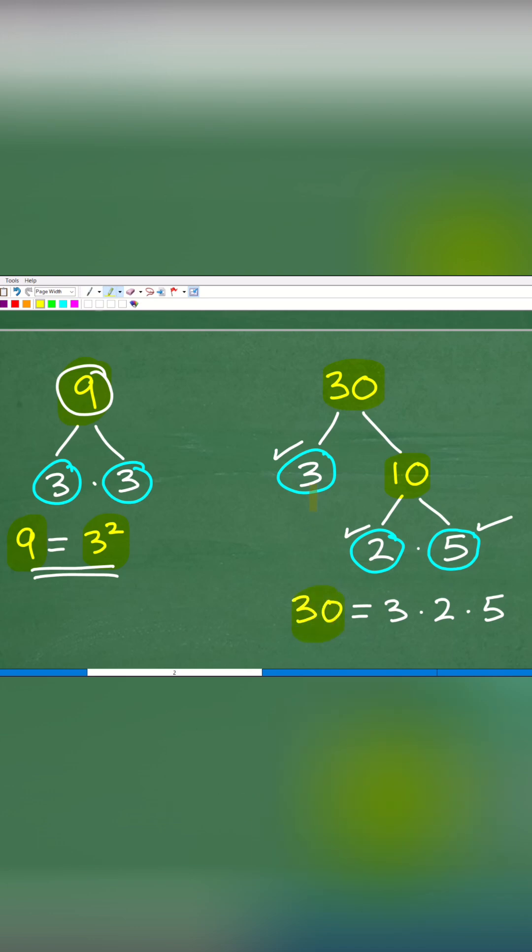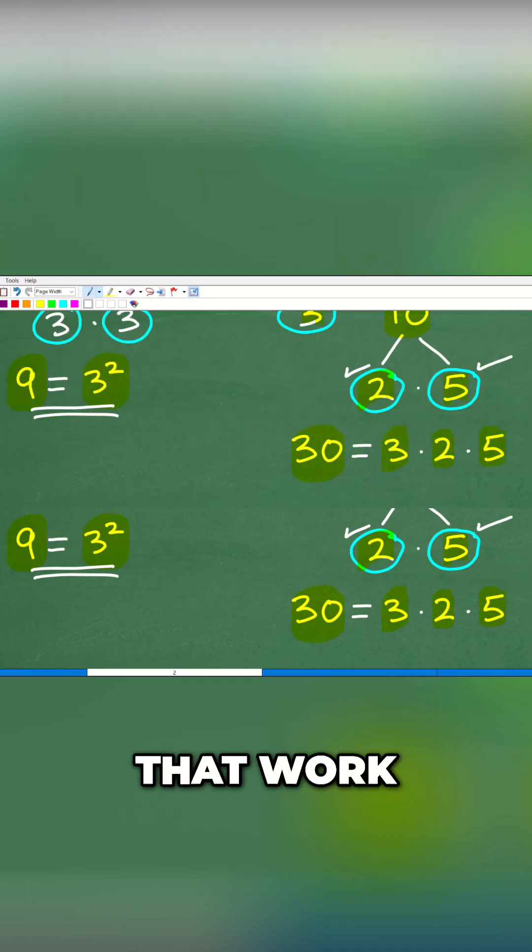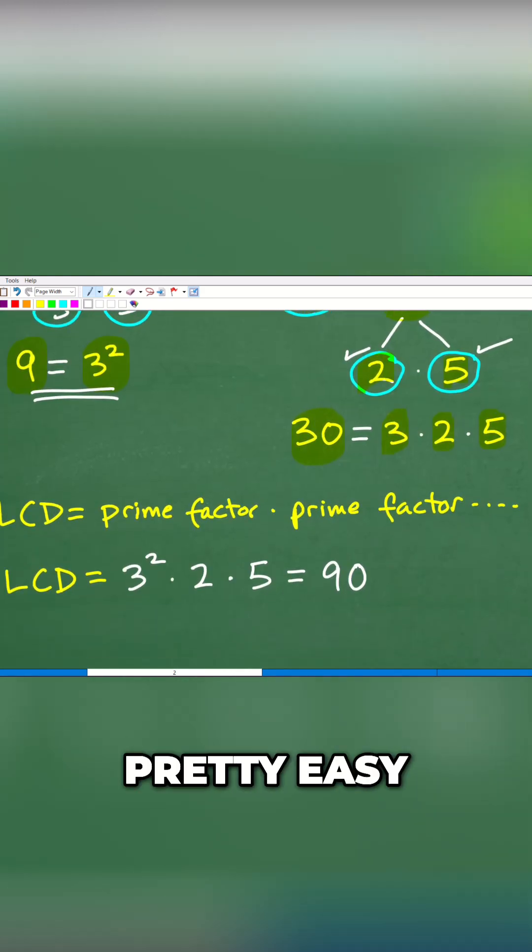So 30 equals 3 times 2 times 5. And so that's how we'll express 30. And of course we have 9 over here. Alright, so once you've done that work, getting the LCD is pretty easy.